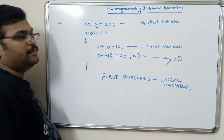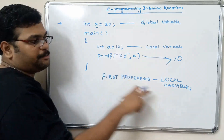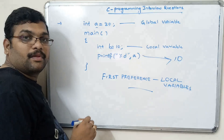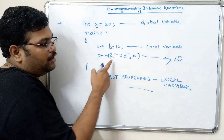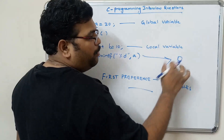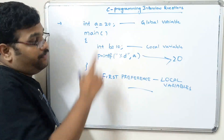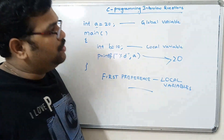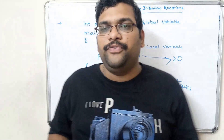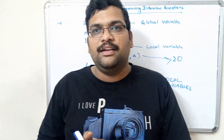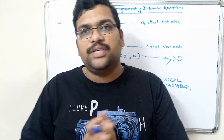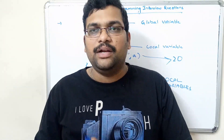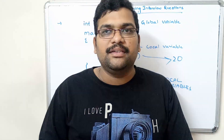If instead we had a variable 'b' equal to 10 as only a global variable, it would automatically take the global variable and print 20. But here since 'a' is also declared locally, the local variable value will be printed. Hope you understood this. If you really understood my sessions, like and share them with your friends. If you have any doubts regarding C programming, feel free to post them in the comment section and I will definitely try to clarify. Don't forget to subscribe to our channel. Thanks for watching!